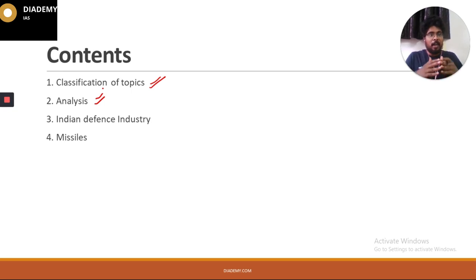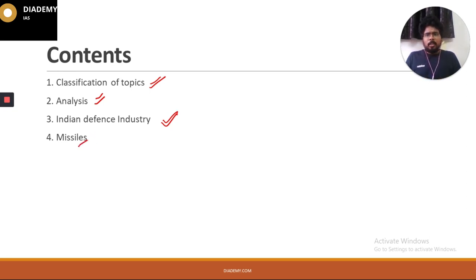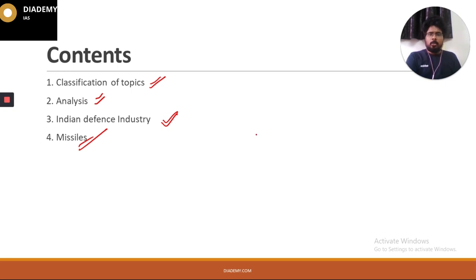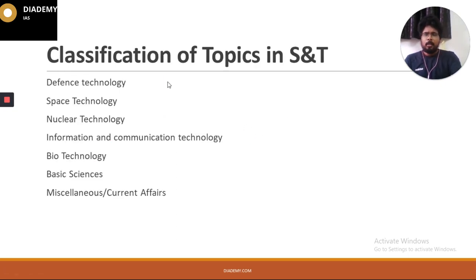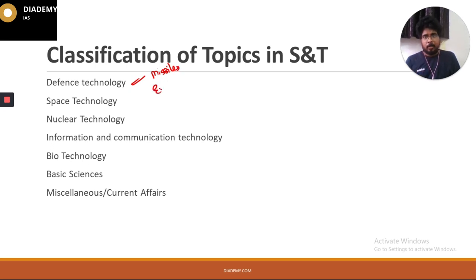After the syllabus analysis, we will start with the Indian defense industry — broadly covering its composition and budget. Then we will study the different missiles used by the Indian Army, Navy, and Air Force. Defense technology also covers different military exercises between countries and various government defense procurement programs.